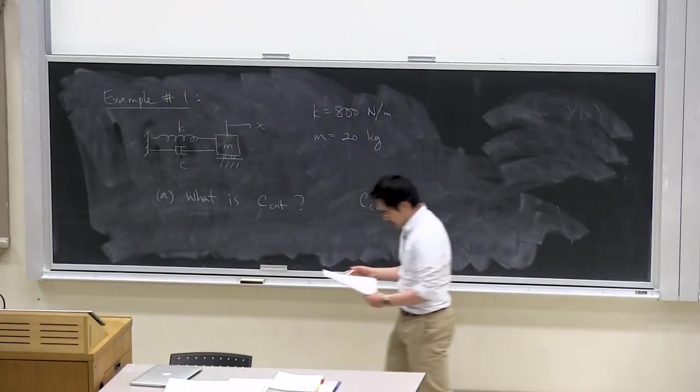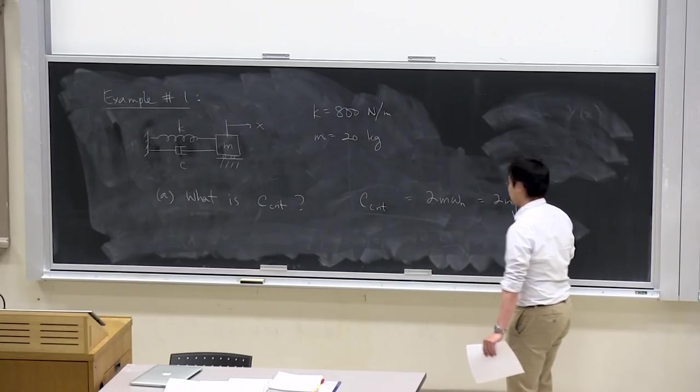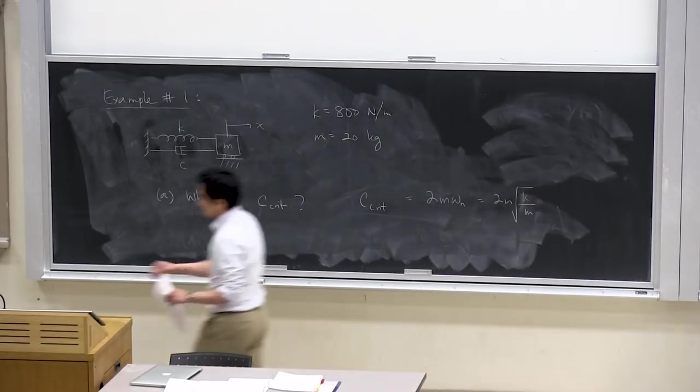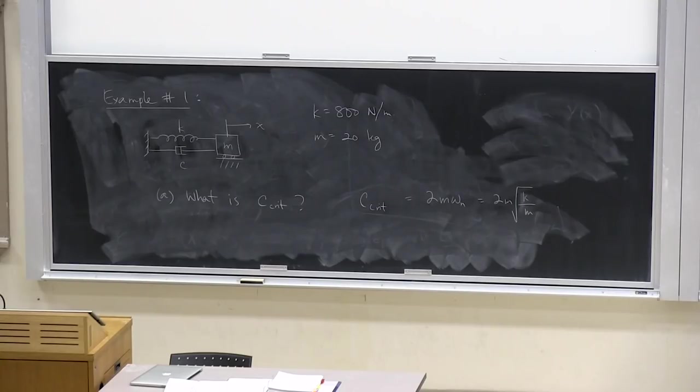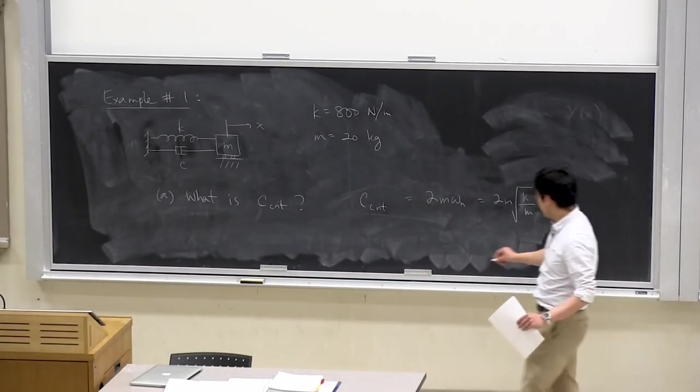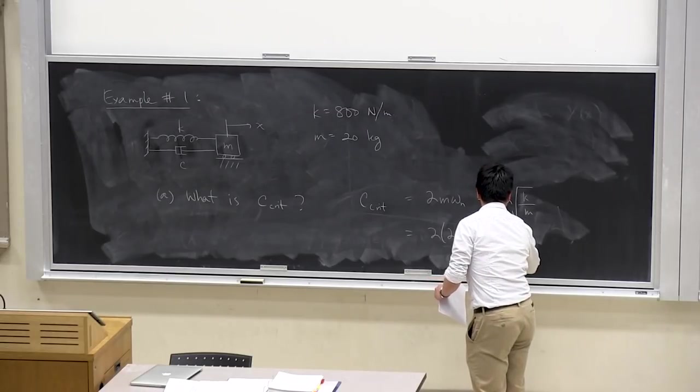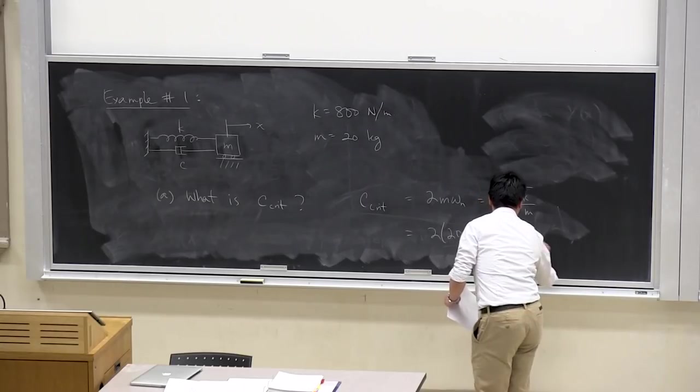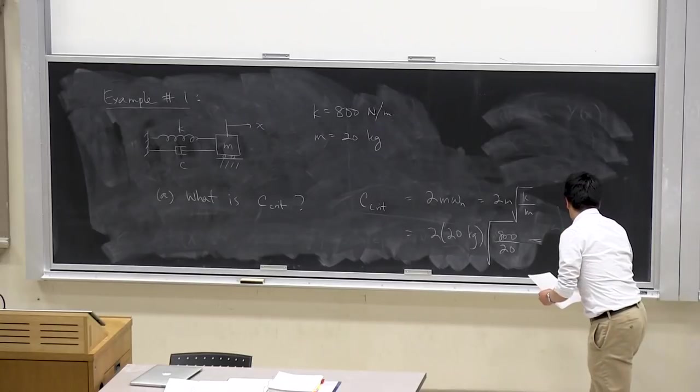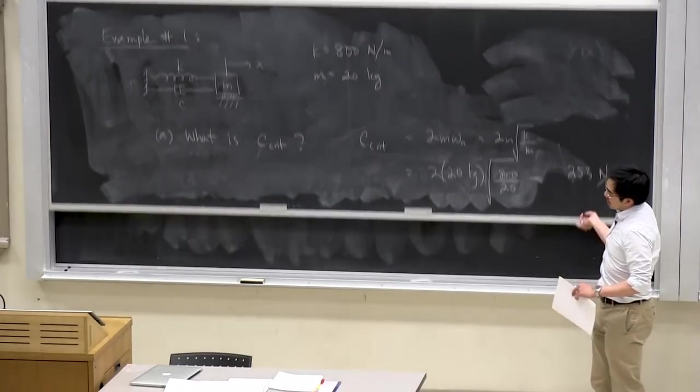The first thing is you do a calculation. The equation is simply 2m*omega_n, or 2m*sqrt(k/m). With just the k and the m, we're going to plug in all the numbers. And I get 253 newton per meter per second. So that's pretty easy. That's just determining c_critical.